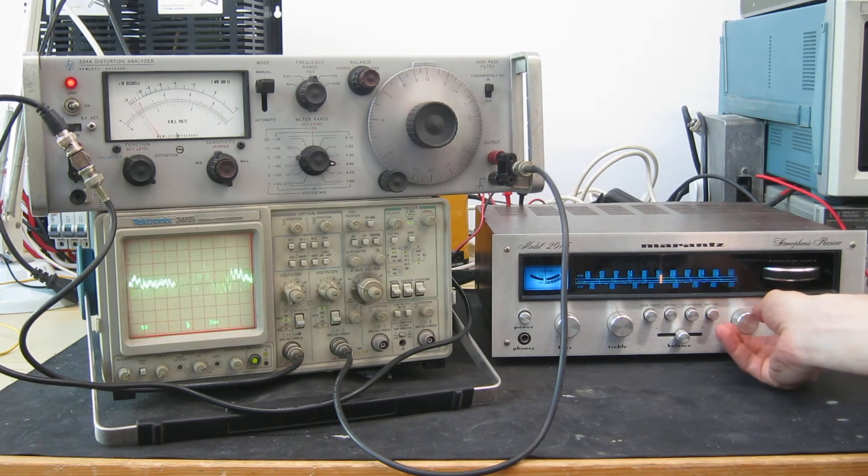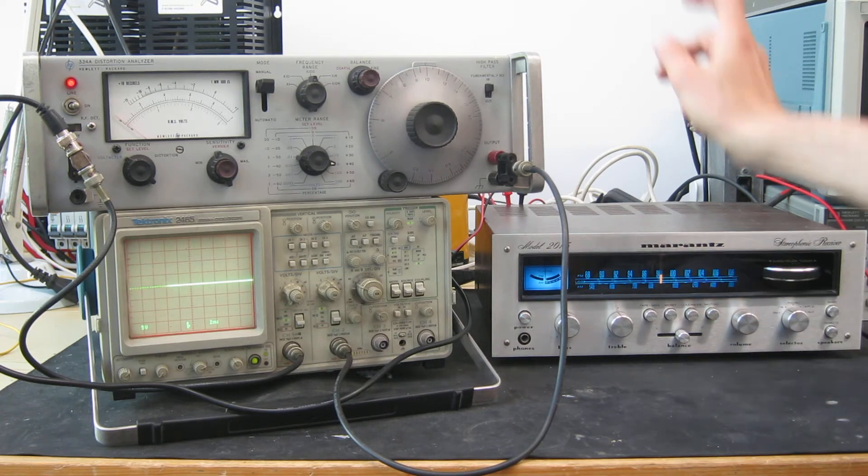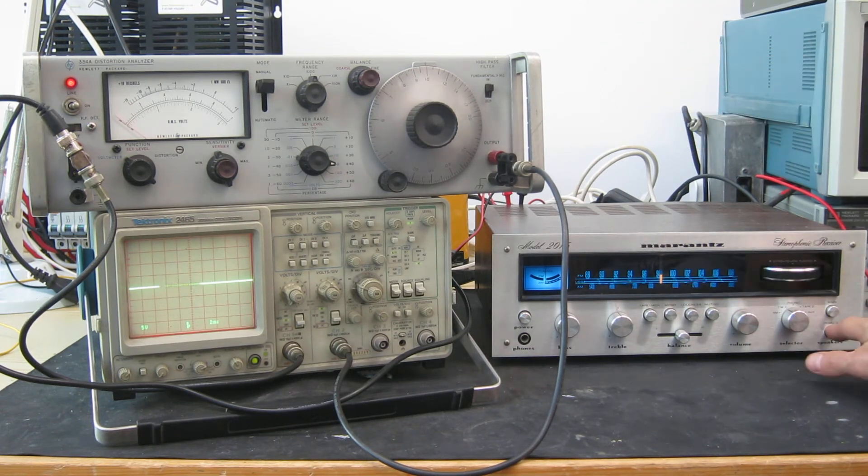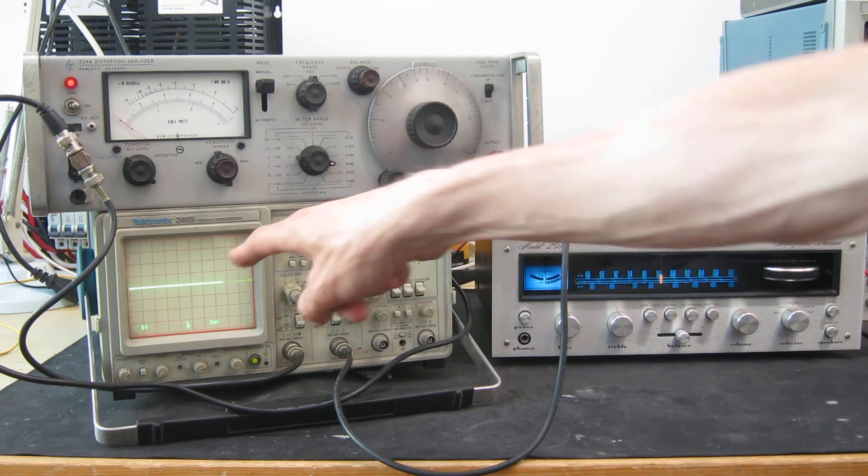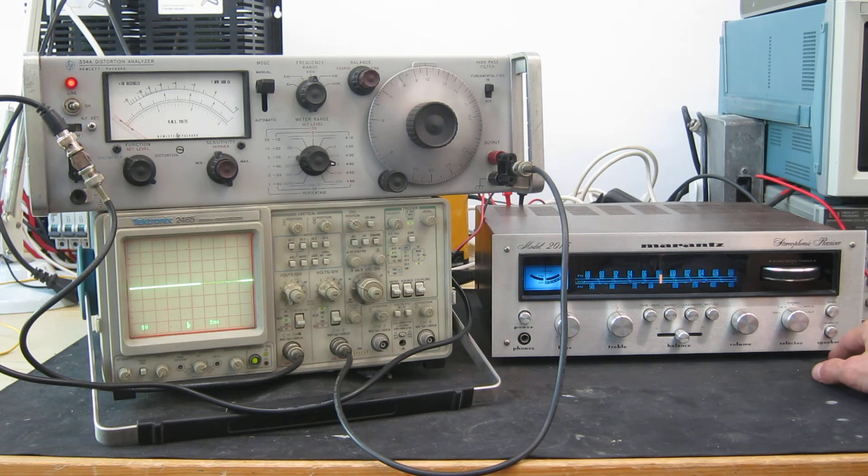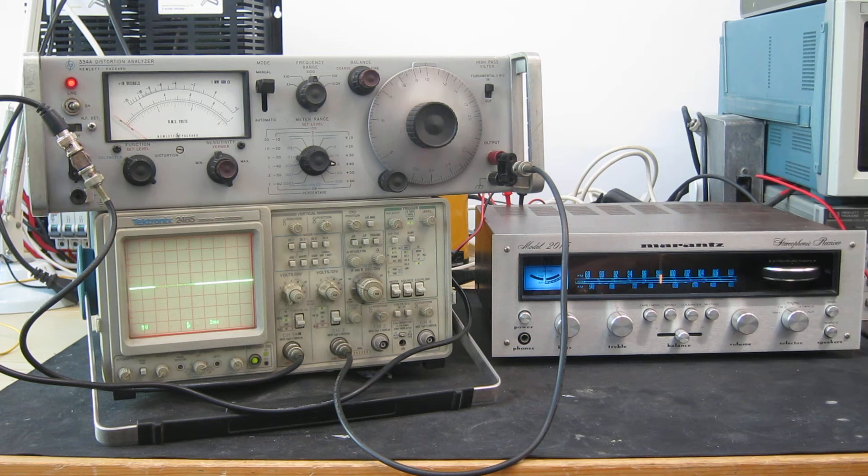So first of all let's see if we can get a measurement of the output power. I've got an 8 ohm load resistor hooked up to the remote speaker output on the receiver here. The main output is connected to the scope and distortion analyzer. It's nice that it has two sets of speaker outputs. I'm just measuring the left hand channel for now.